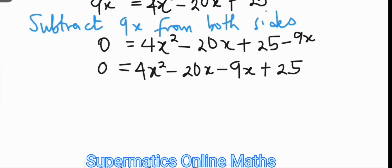We could swap sides also, so that we have 4x squared minus 29x plus 25 equals 0.